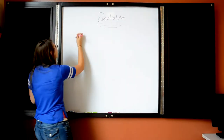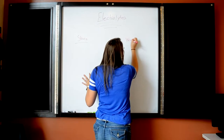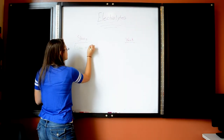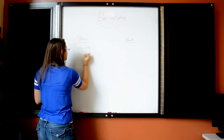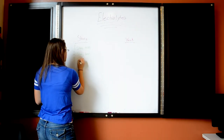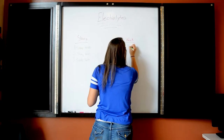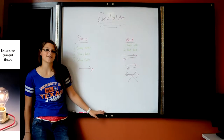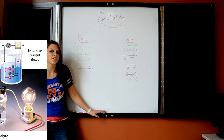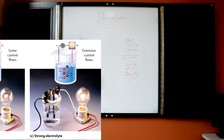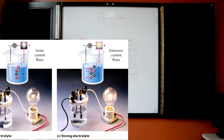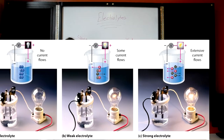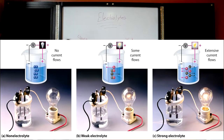There are two different types of electrolytes: strong electrolytes and weak electrolytes. Strong electrolytes are made up of strong acids, strong bases, and soluble salts, while weak electrolytes are made up of weak acids and weak bases. Another way to think of it is that strong electrolytes will light a light bulb really brightly, while weak electrolytes will only light it up a little bit.